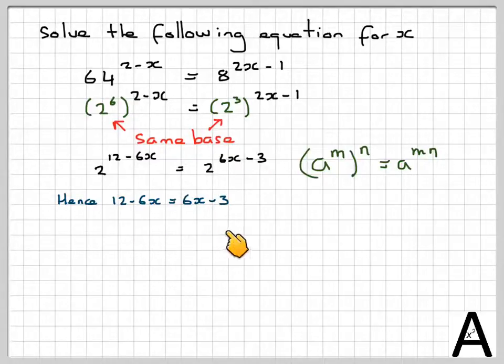So now we've just got a linear equation to solve, which is quite easy. Taking the minus 6 over here, we get 12x. Taking the minus 3 over here, we get 15. So we're going to get x equals 15 over 12. Therefore, x will be equal to 5 over 4.